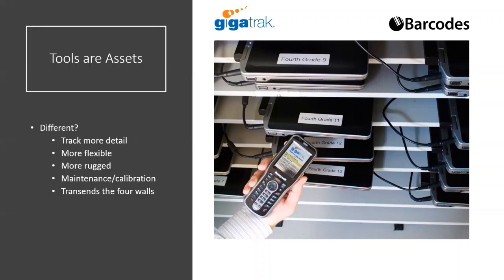Tool tracking is typically more flexible. You can start with an on-premise solution — a solution you purchase once, install on a PC server, and use to check tools in and out — and then segue to a cloud-based solution when the need arises. So generally a tool tracking solution lets you start with one thing and move into something else as the need arises.